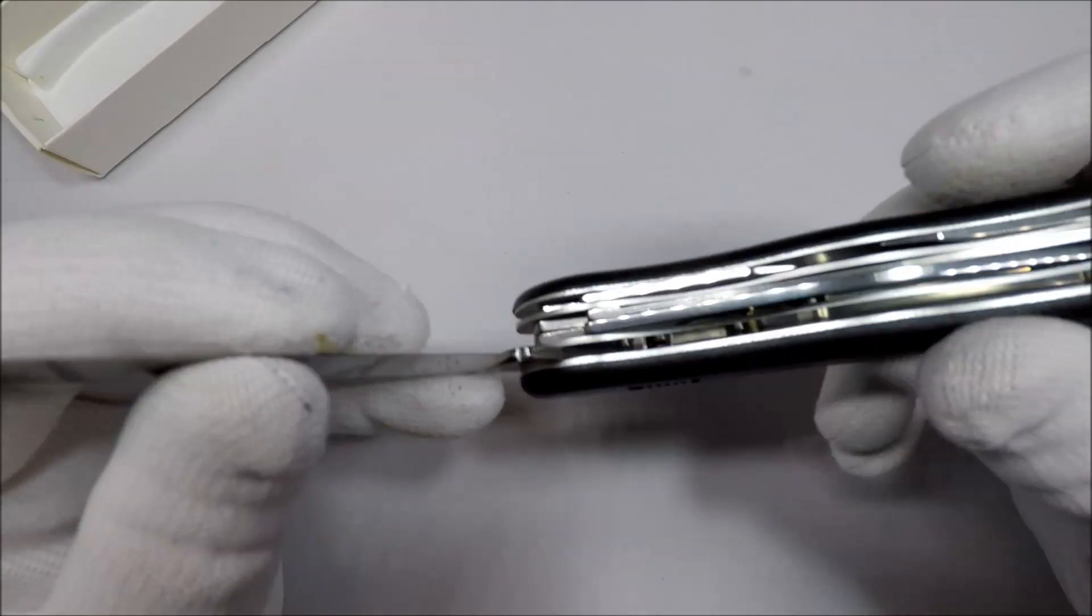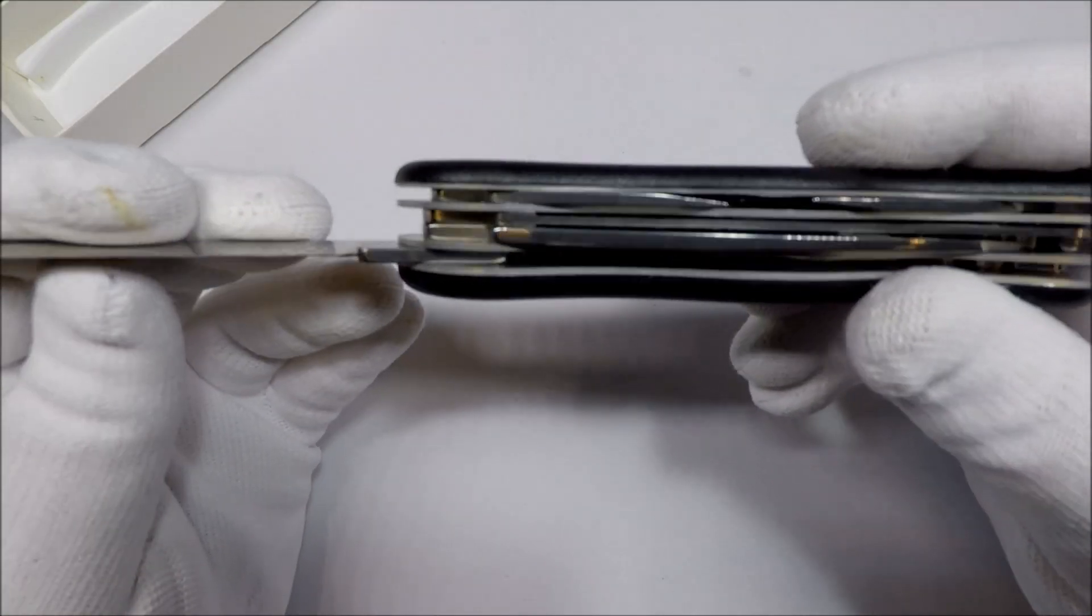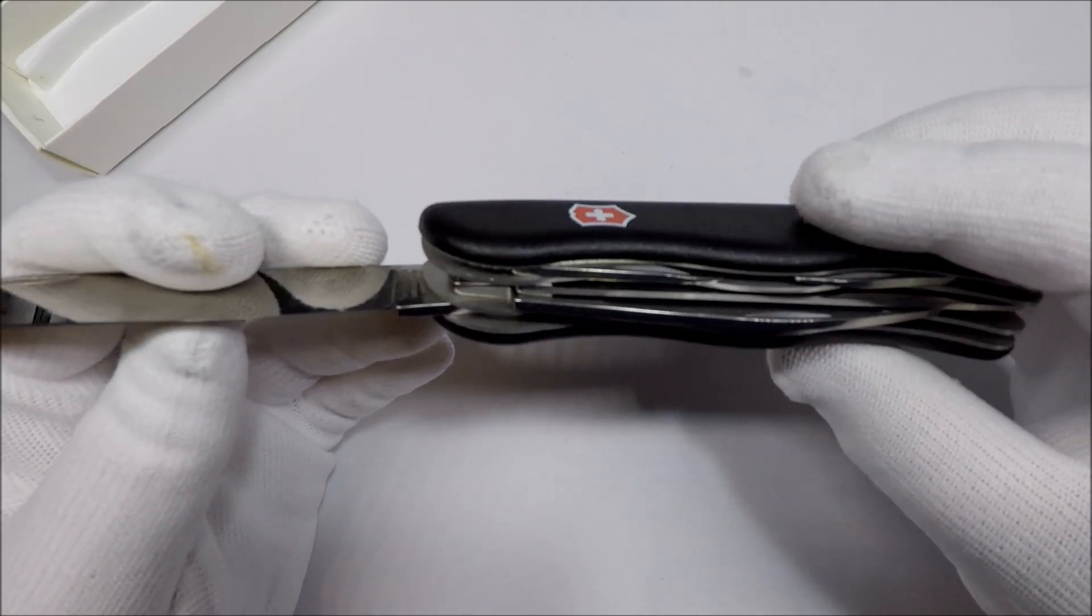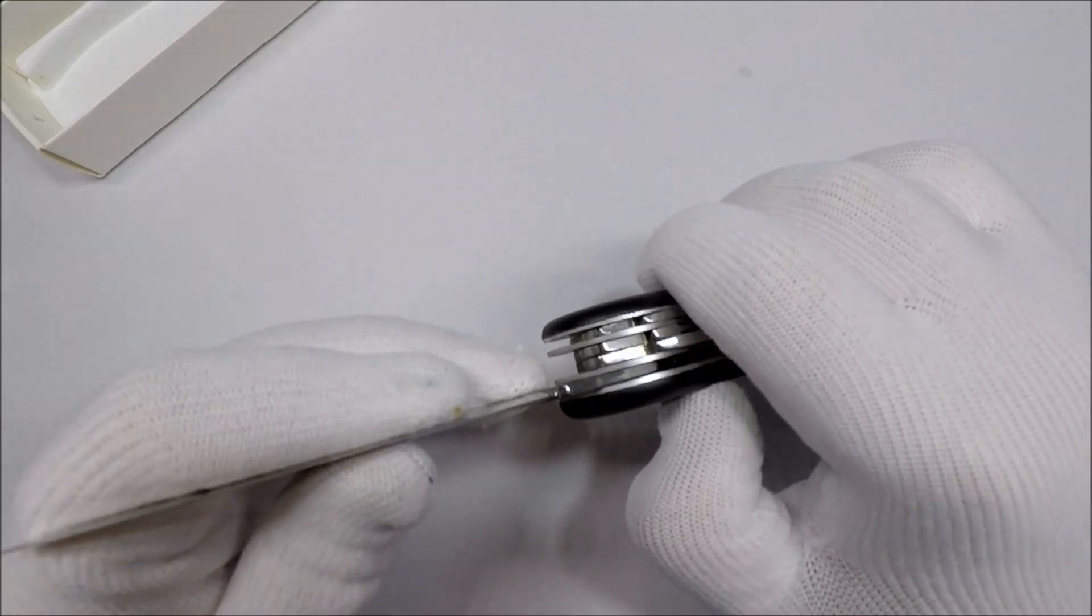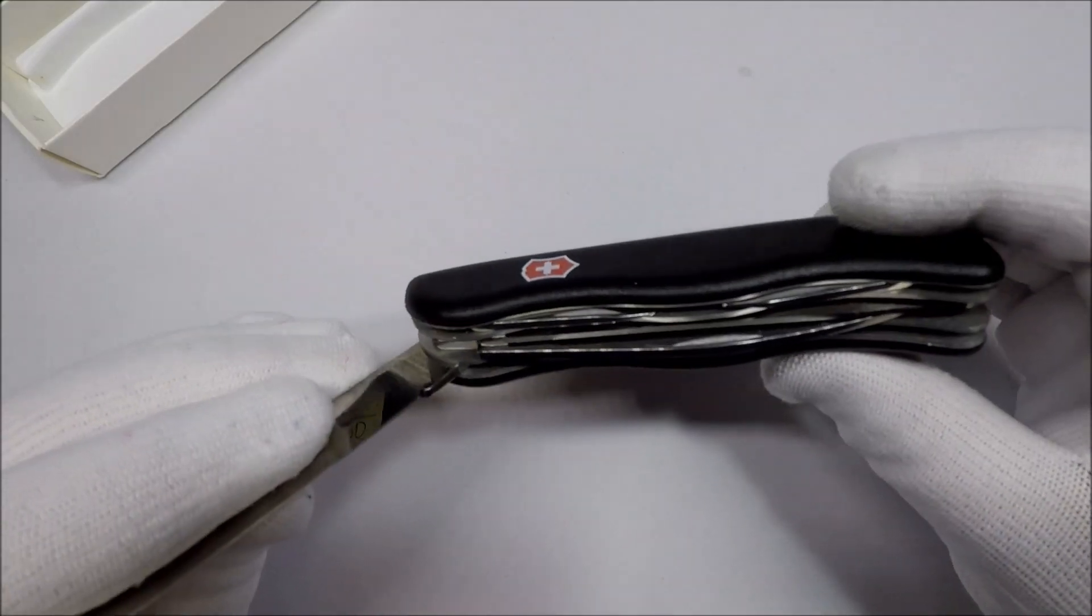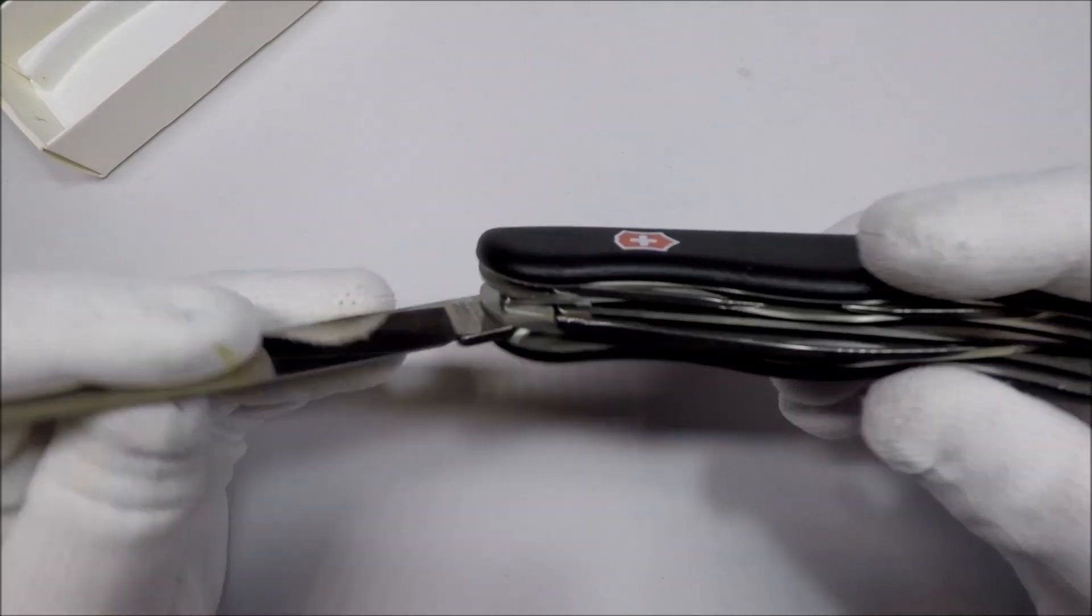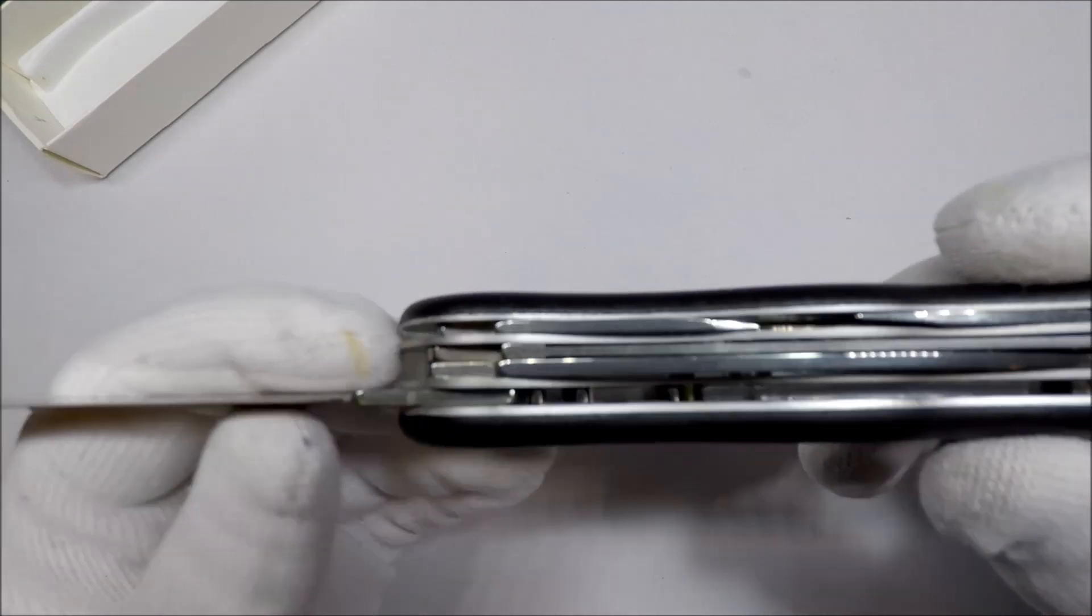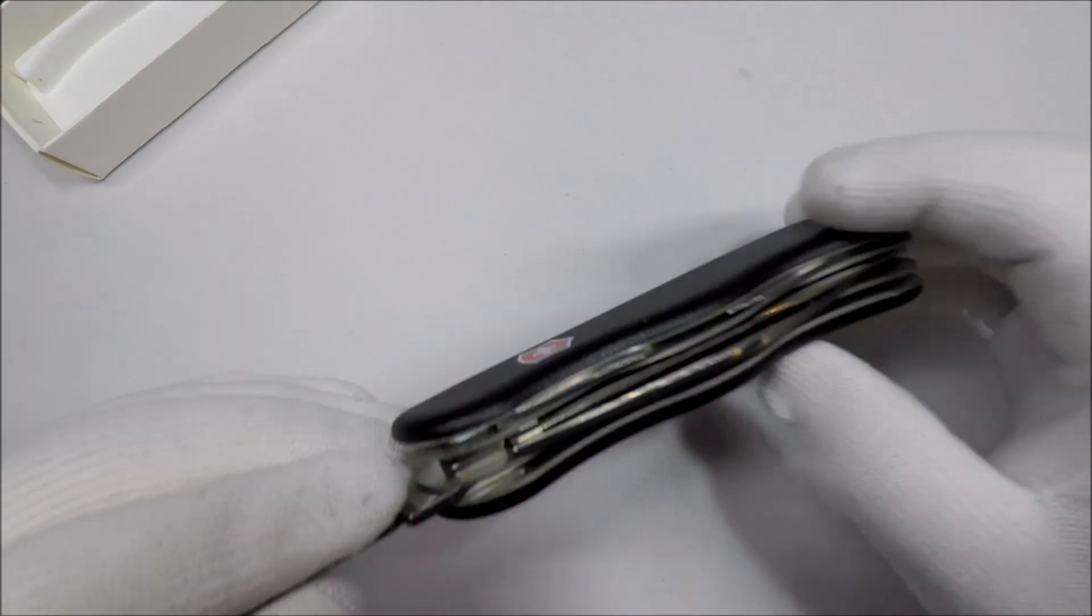And what happens is, let me see if I can get it on camera. Can y'all see there in the center, I'm trying to see where the locking mechanism is. I thought this one, for some reason I was thinking this was a liner lock like some of the other ones. I guess not. That is interesting. See down there? Alright.